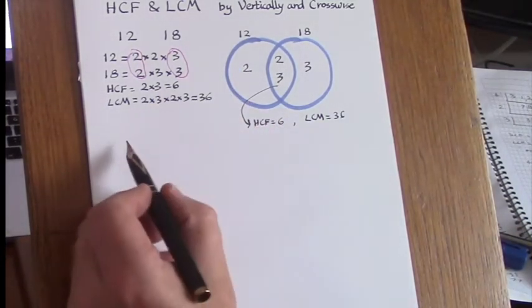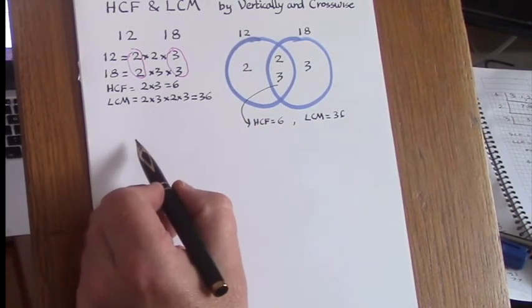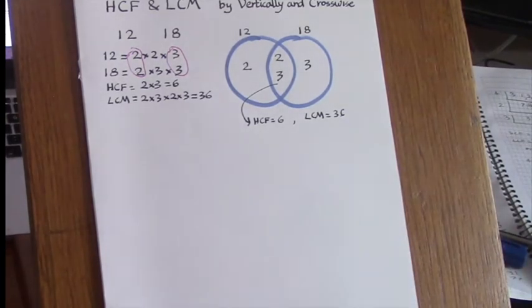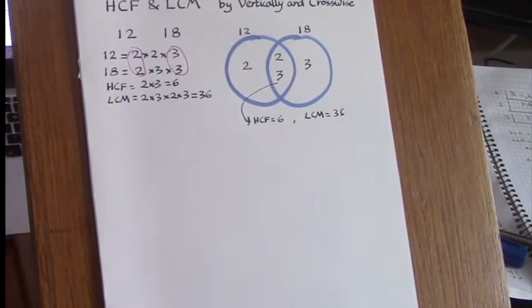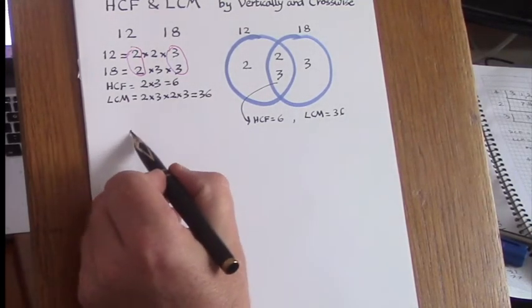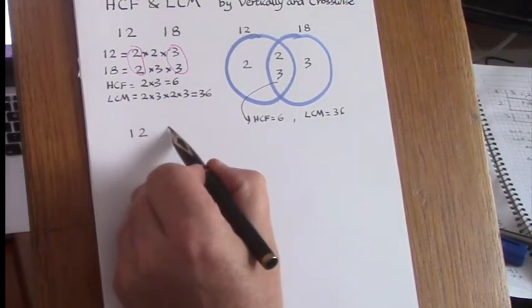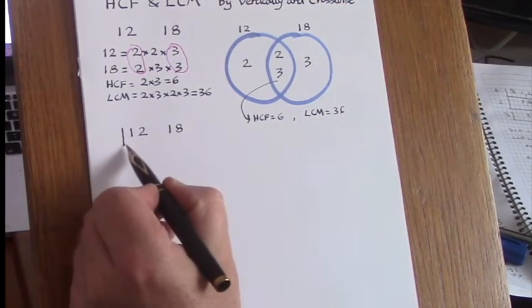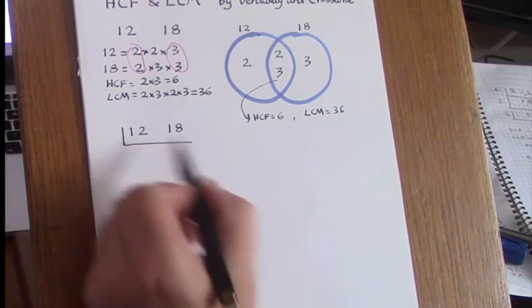Now the vertically and crosswise method doesn't require breaking the numbers down necessarily into prime factors. It works like this: we set out the two numbers 12 and 18, and we find a number that can divide into both of these.